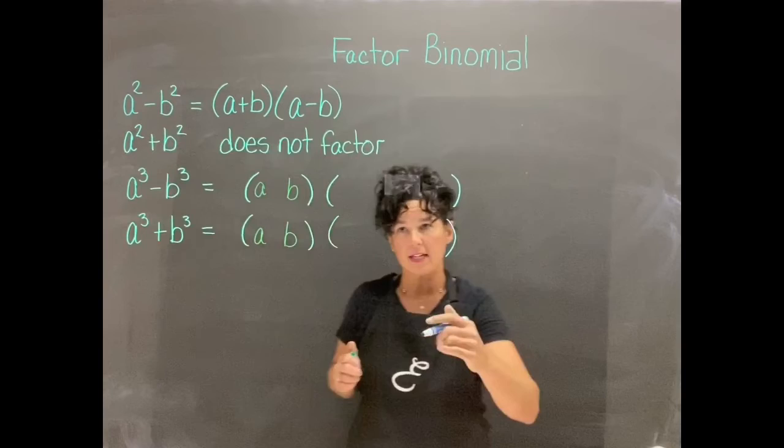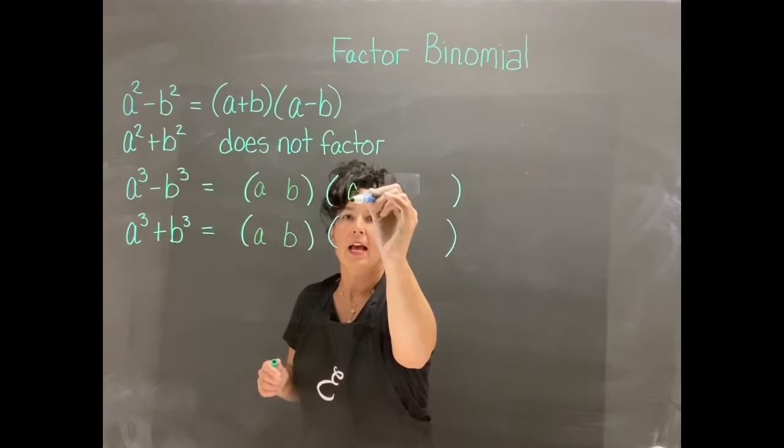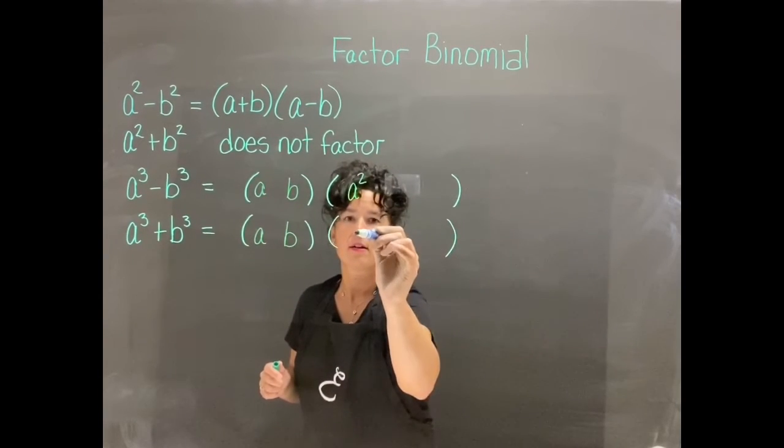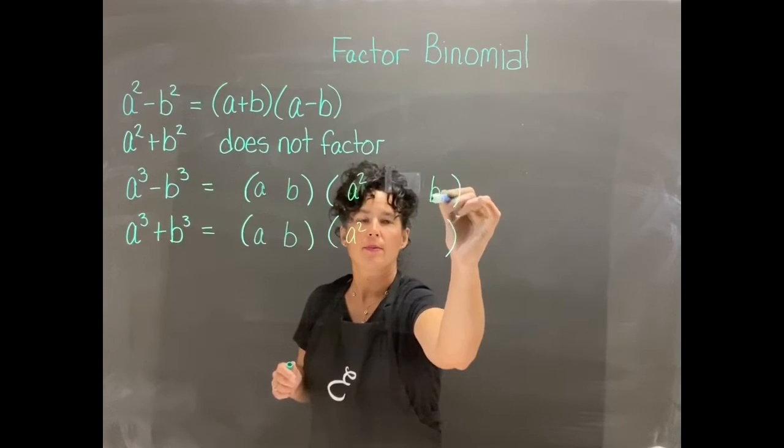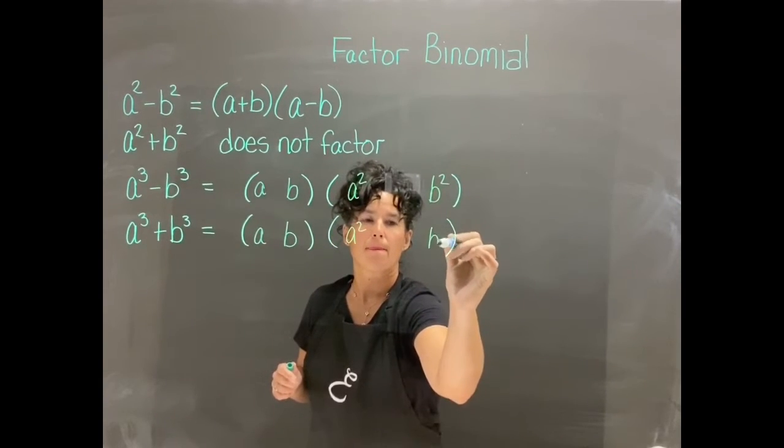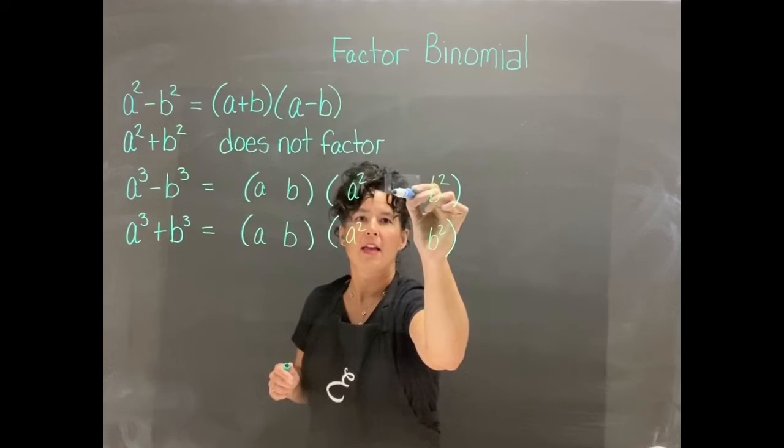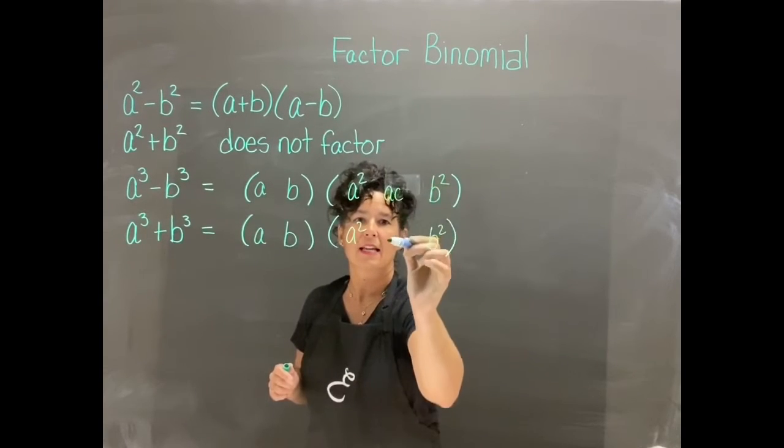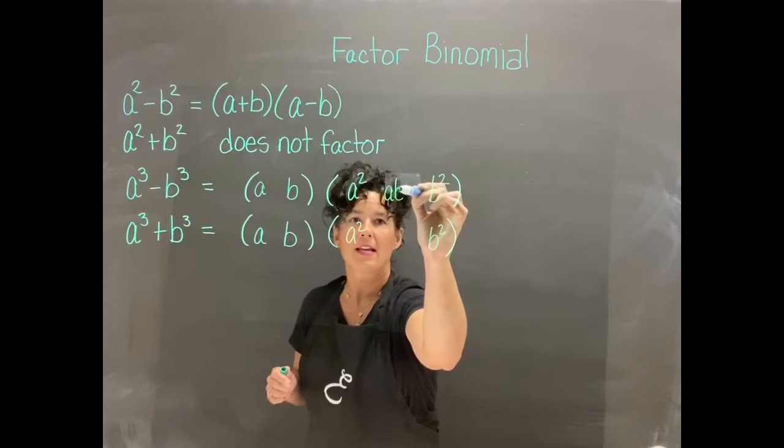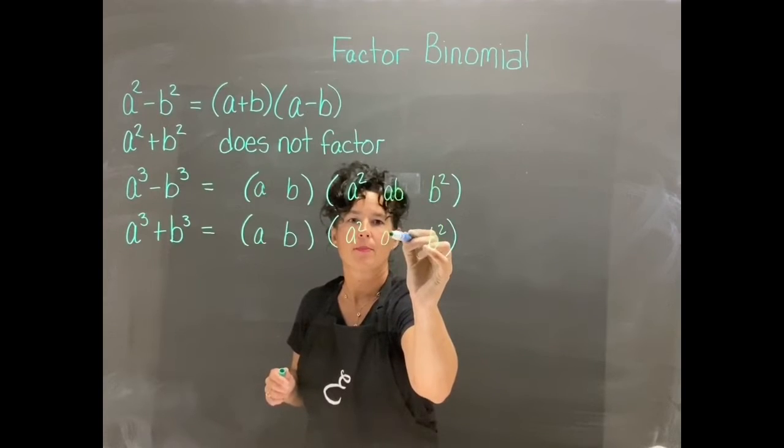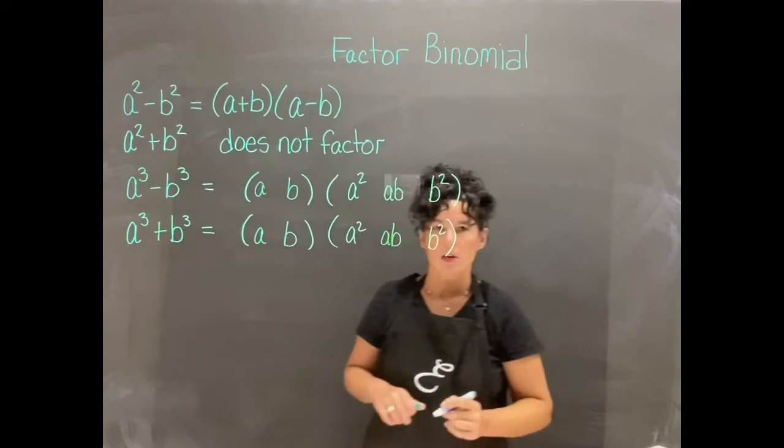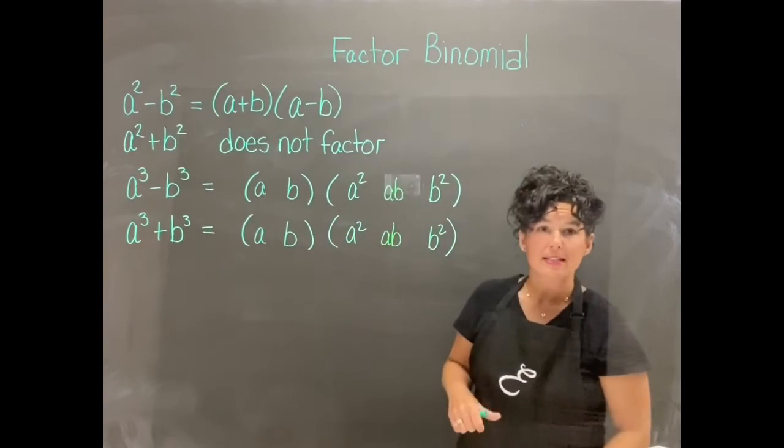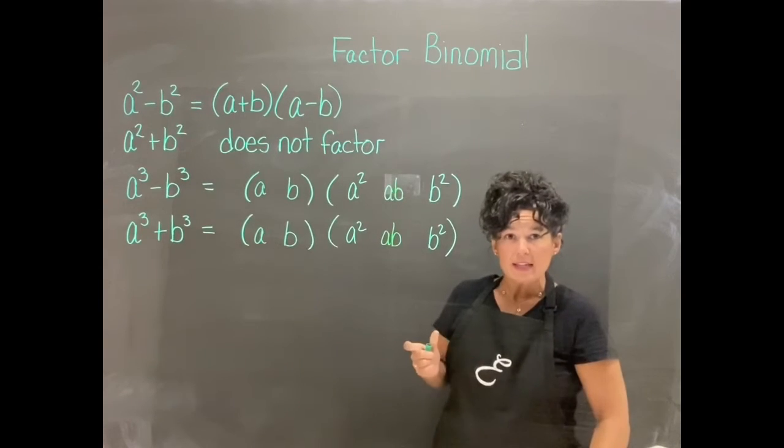And in both instances, we're going to have an a squared, a b squared, and then we have an a b in the middle. So the two formulas look basically the same. The only thing is, where are we going to put the pluses and the minuses?